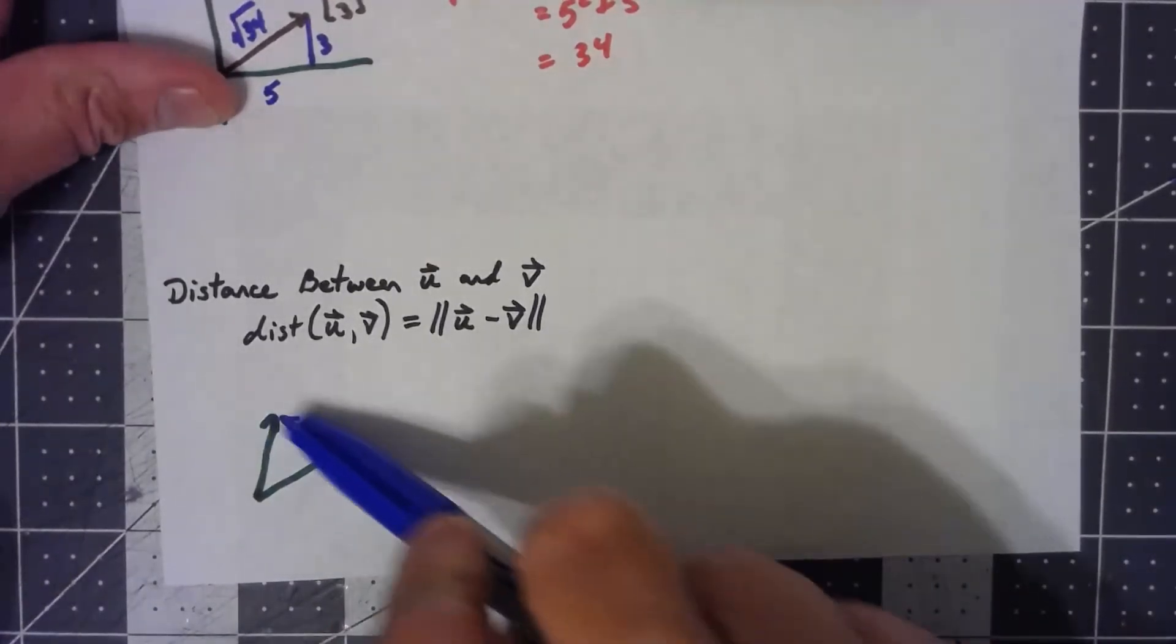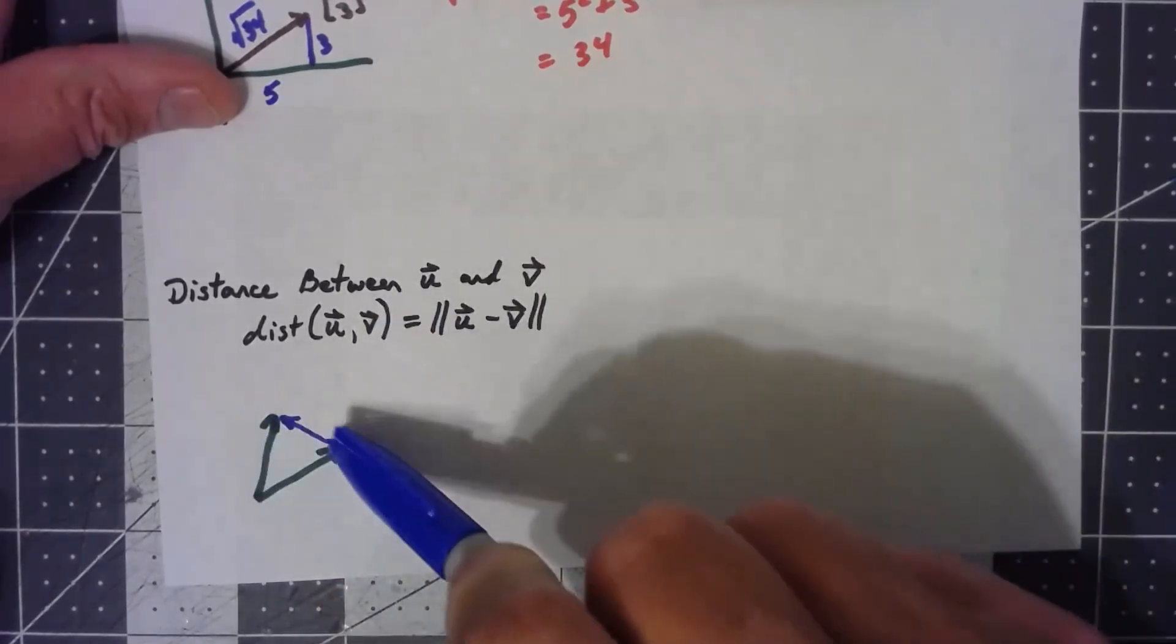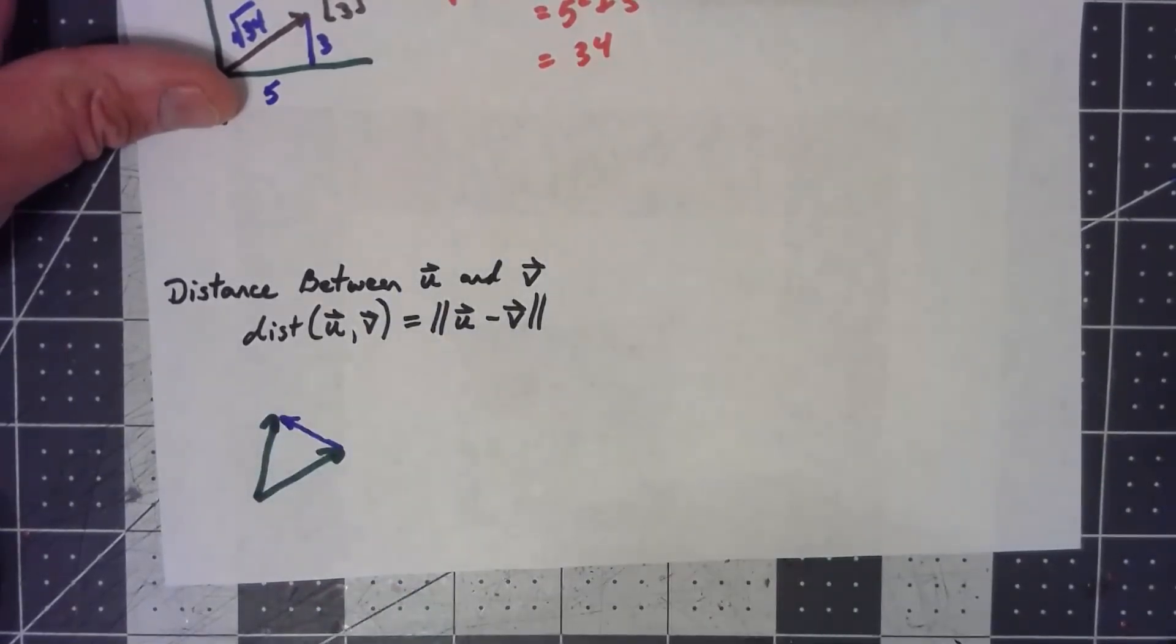So what we can say is that the magnitude of that, the norm of that, or the length of that, is how far apart those two vectors are from each other.